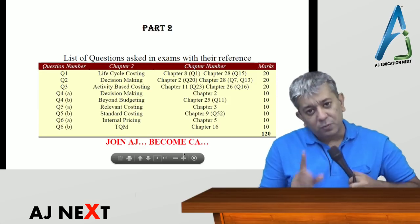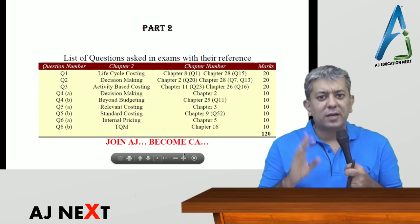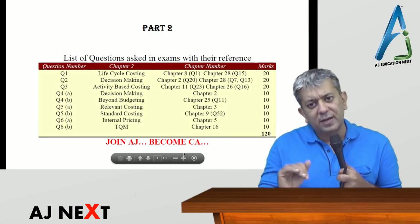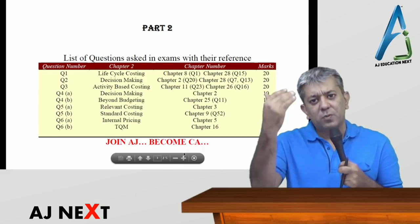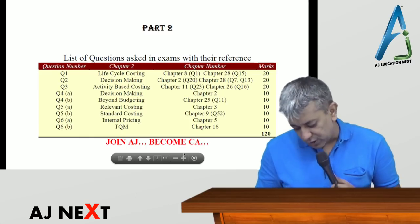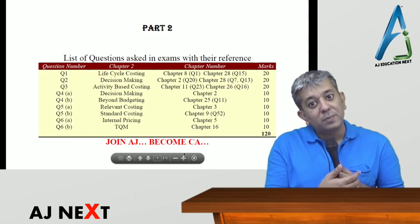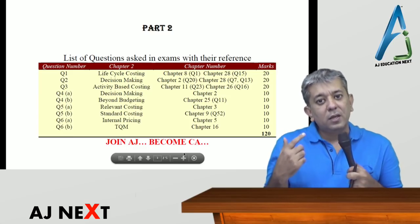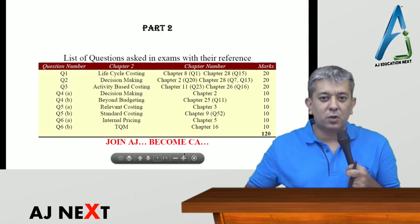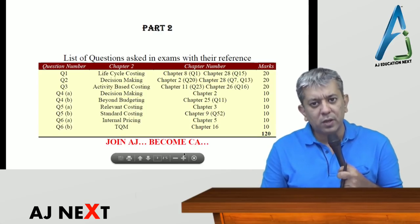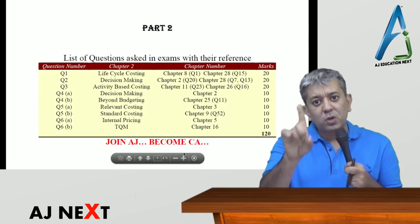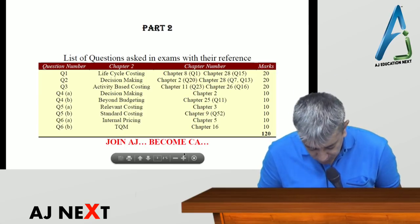Question number 4b was the only theoretical question — budgetary control ke ander a concept called beyond budgeting, uske oopar that entire question was theory. Koi practical part nahi tha — aapko beyond budgeting ka concept kya hota hai, uske baare mein poochha gaya tha. Jo question numbers main de raha hoon, humari jo textbook hai uske twelfth edition ke hisaab se hain. Agar aap fourteenth edition use kar rahe ho, question numbers kuch alag honge kyunki books were changed slightly.